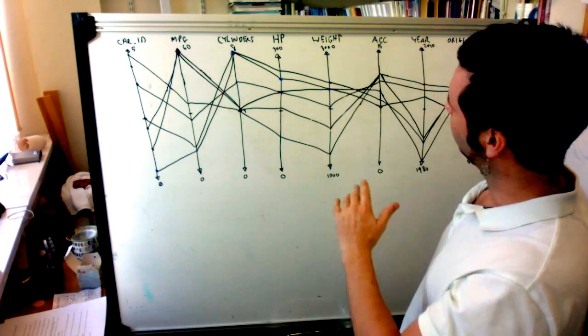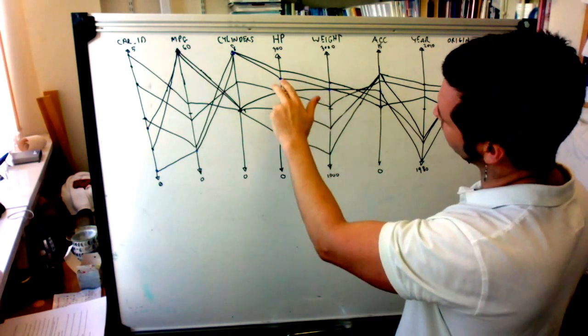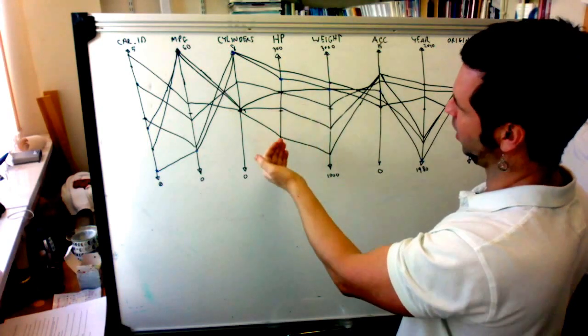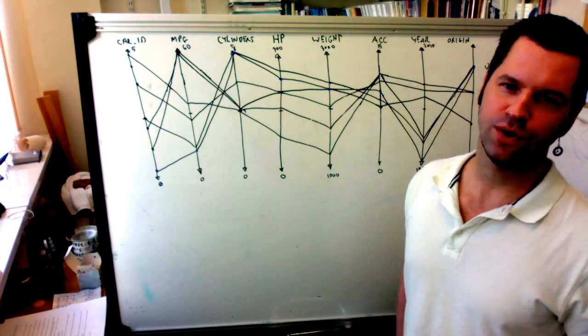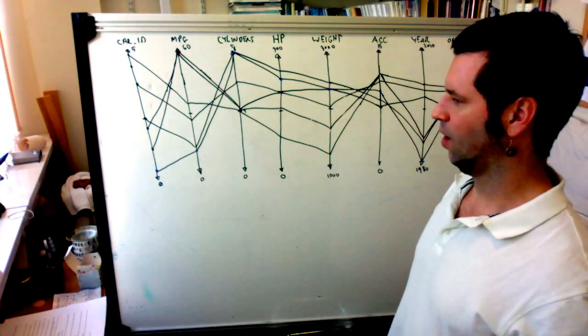We can make observations about a number of dimensions. We can make, for example, there's a roughly direct relationship between horsepower and weight. As the horsepower increases, the weight of the car also increases. And so on.